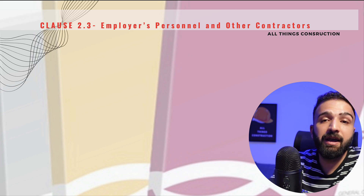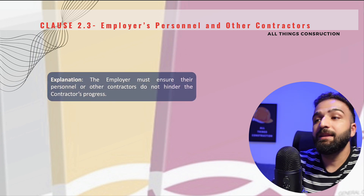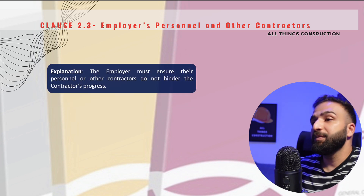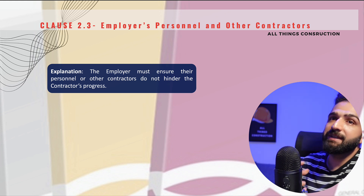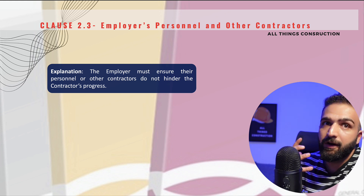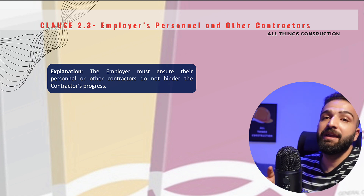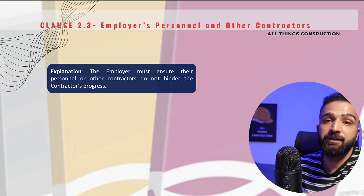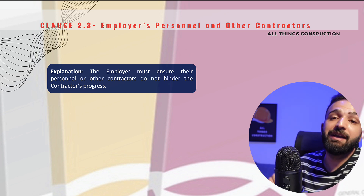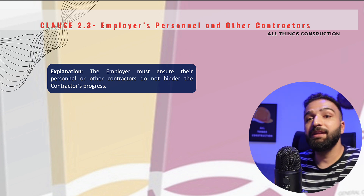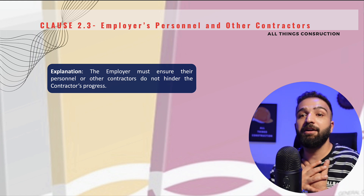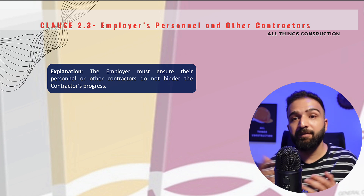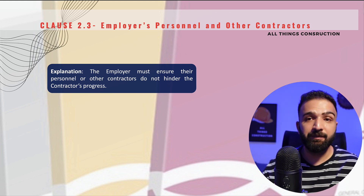Let's jump to Clause 2.3 — Employer's Personnel and Other Contractors. A simple explanation is that this clause imposes an obligation on the employer to manage their personnel and subcontractors working on site. This is done to ensure that the main contractor is not disrupted.